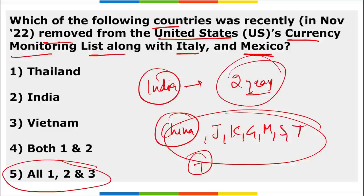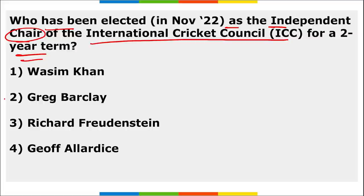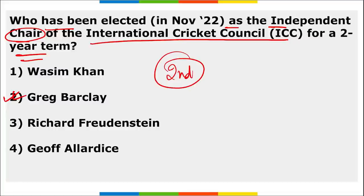Who has been elected as the independent chair of the International Cricket Council for a period of two years? He is Greg Barclay. Remember, Greg Barclay was first appointed as independent chair in November 2020, and is now re-elected for his second term. Roger Binney will be the new president of BCCI.